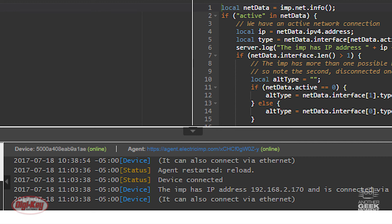I can see on my device setting here, the device is online and my agent is online. So this device has now communicated with the IMP Cloud and sent back its IP address.